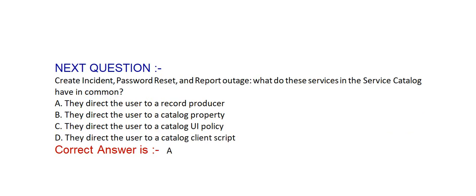Create incident, password reset, and report outage — what do these services in the service catalog have in common? Option A: they direct the user to a record producer. Option B: they direct the user to a catalog property. Option C: they direct the user to a catalog UI policy. Option D: they direct the user to a catalog client script. Correct answer is option A — they direct the user to a record producer.